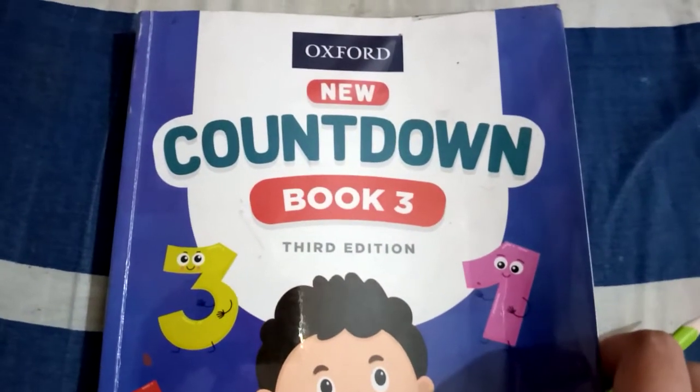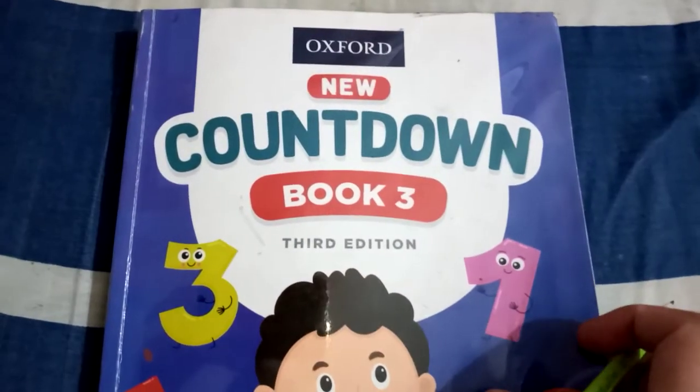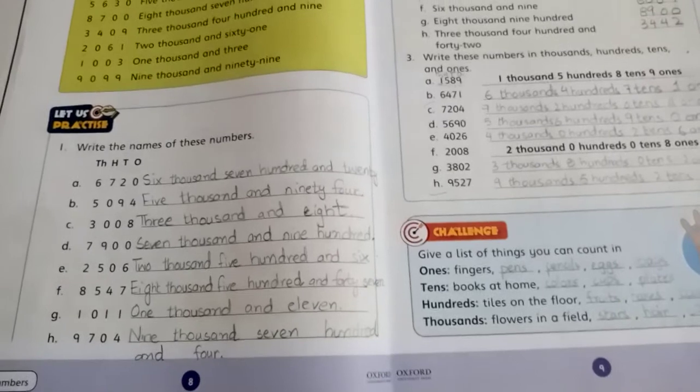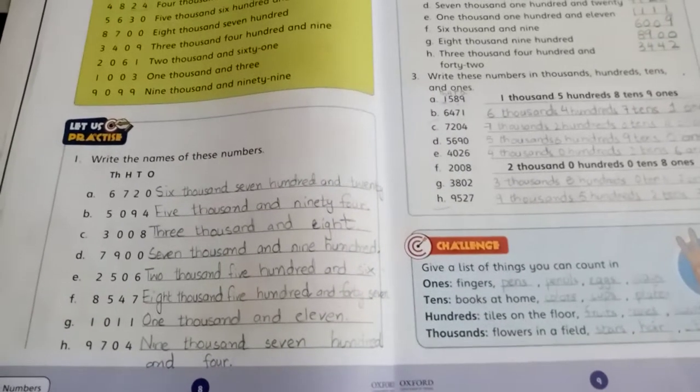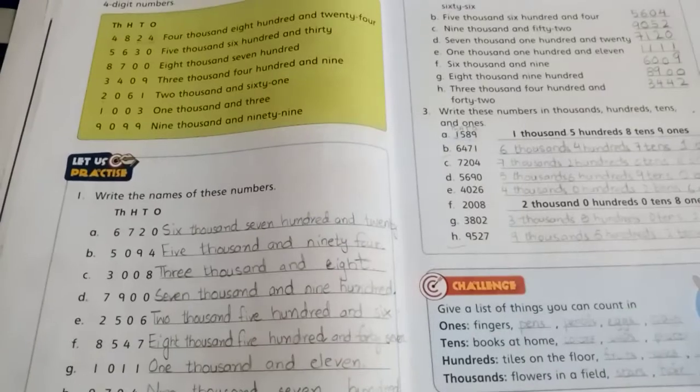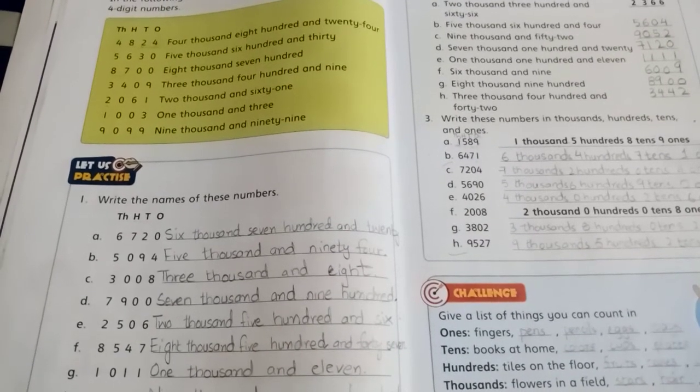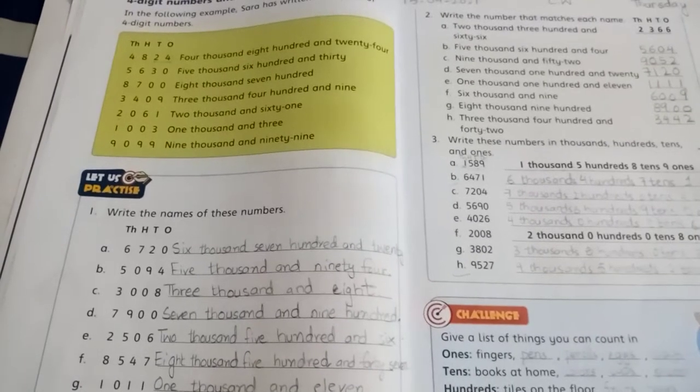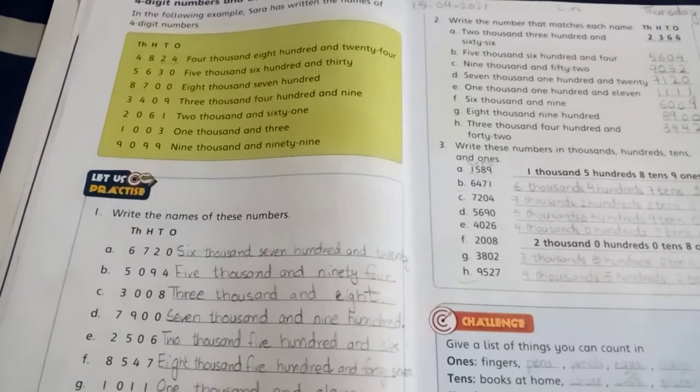Assalamu alaikum students, I am your teacher Thibaba Babur. Let's take out the book Count On Book Three. We'll work on page number eight and nine today. First of all, I will tell you what we have done yesterday. We learned about the Roman numbers, then we learned about the digits up to four digits.